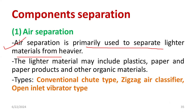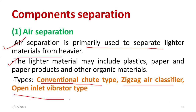The lighter material will have lower density. The lower density particle will always go to the upper side, where high density particles will be settled down because of gravitational force. There are three methods which come under air separation: one is called conventional chute type, another is zigzag air classifier, and ultimately the open inlet vibrator type.